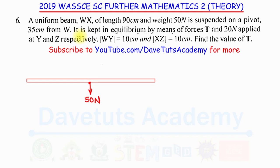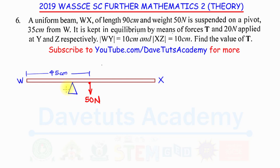We are told it is being suspended on a pivot which is 35 cm from W. Taking this as point W and this as point X, the distance from W to the pivot is 35 cm. The weight acts at the midpoint, which is 45 cm from W.